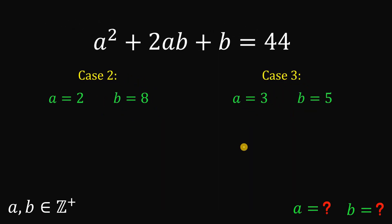So now let's check if this is correct. So case 2, a is 2 and b equals 8. So let's double check. Let's replace all a with 2 and all b with 8. So we have here 4 plus 32 plus 8. 4 plus 32 plus 8 simply equal to 44. And this is correct.